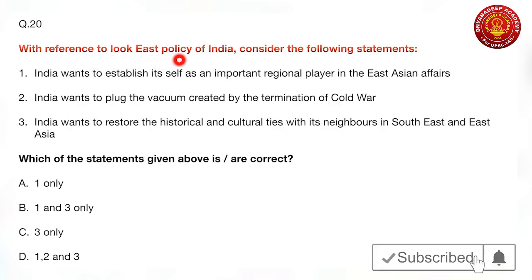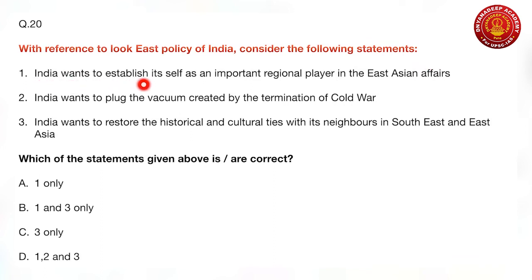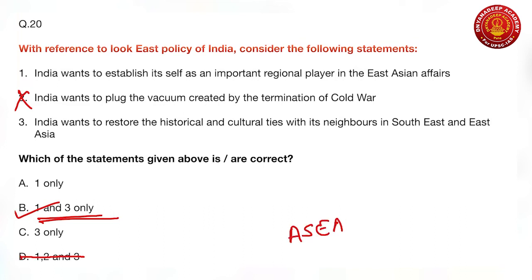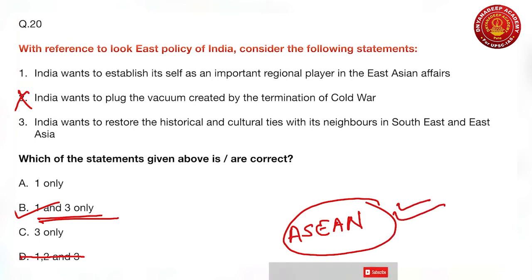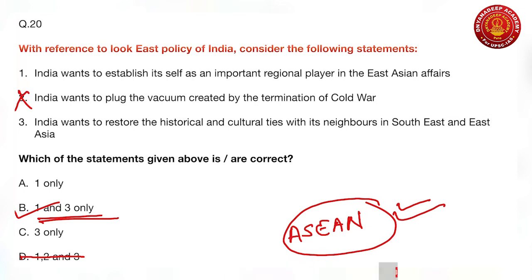Question 20: with reference to India's Look East Policy. Statement 1 — India wants to establish itself as an important regional player in East Asian affairs — is correct. Statement 2 — India wants to plug the vacuum created by the termination of the Cold War — is wrong, because India's most important foreign policy principle is non-alignment. Since statement 2 is wrong, option D is eliminated. Statement 3 — India wants to restore historical and cultural ties with neighbours in South, East, and East Asia — is very true. So the correct answer is one and three. ASEAN has been a key focus of UPSC for many years.